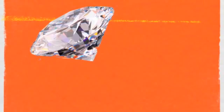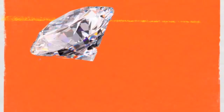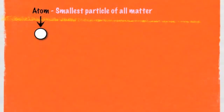So let's take the atom first. Here is a picture of a diamond, and a diamond is a type of pure substance, meaning it's only made up of one type of atom or one type of particle. Let's say that that little white circle is the smallest particle of that diamond, which we would call an atom. One of the ways in which we can define an atom is that it's the smallest particle of any type of matter — the smallest particle of all matter.